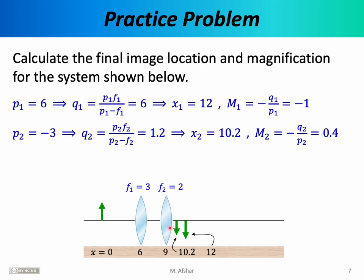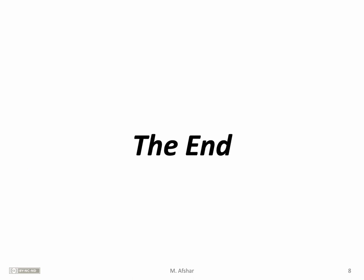The magnification for lens 1 is −1, and for lens 2 it is −Q₂/P₂ = −1.2/(−3) = 0.4. The total magnification is (−1) × (0.4) = −0.4, meaning the final image is inverted relative to the object and only 40% its size. And that is the end of this lecture. Thank you for your attention.